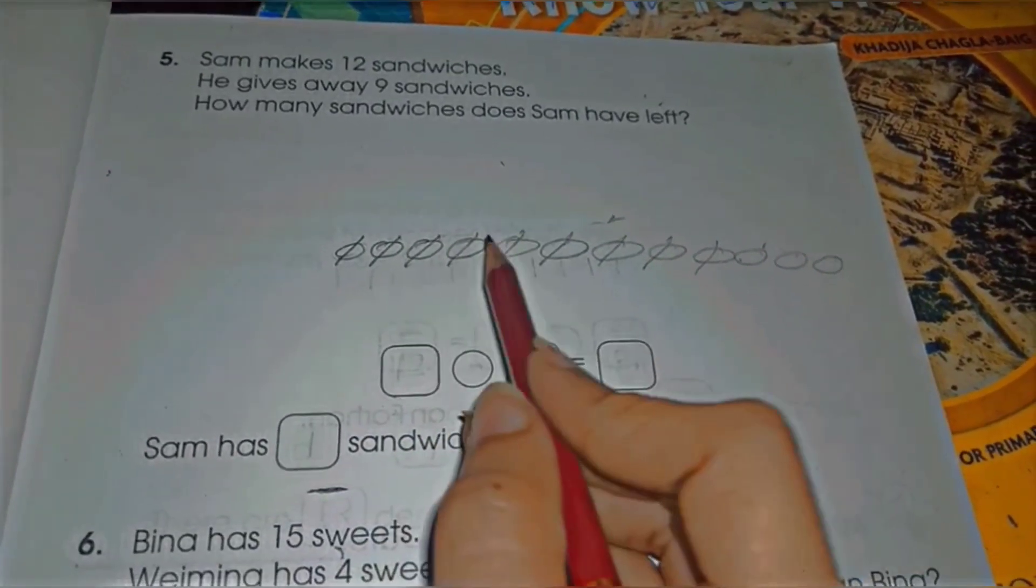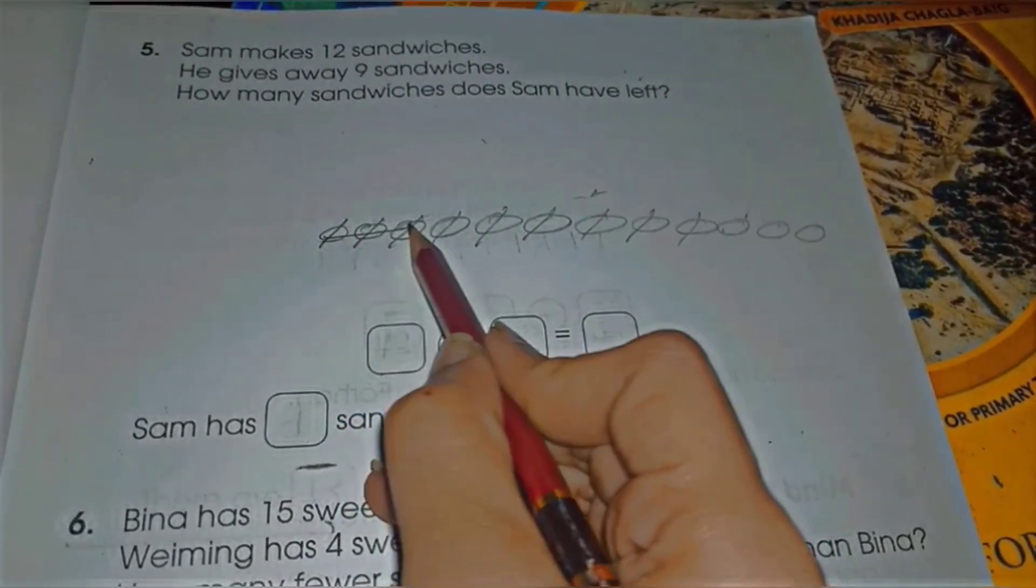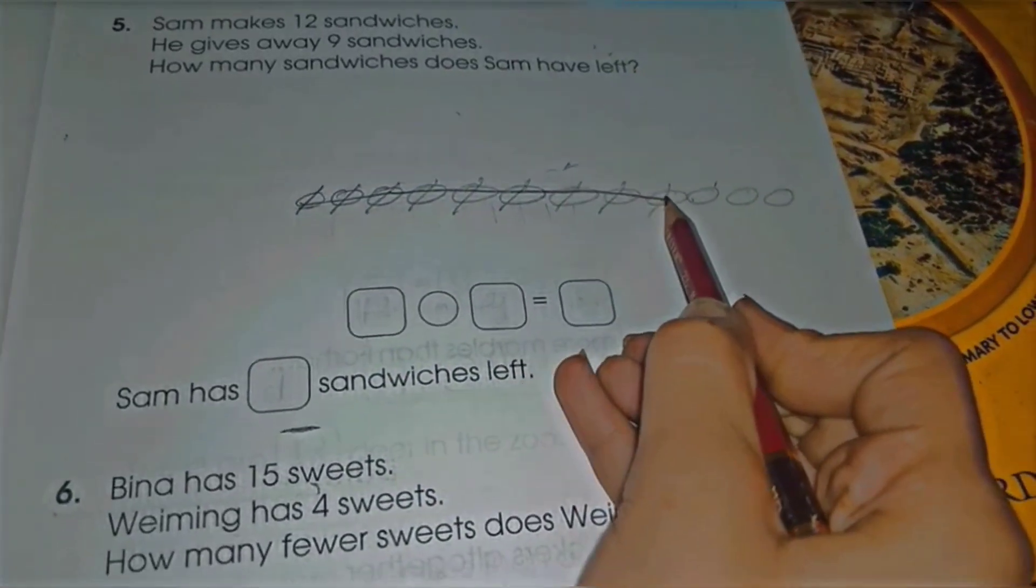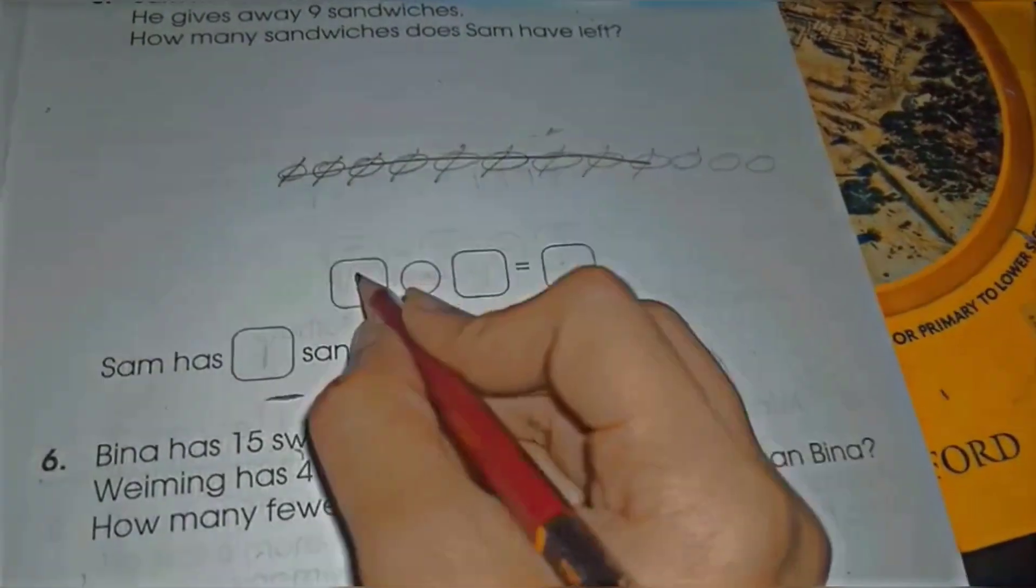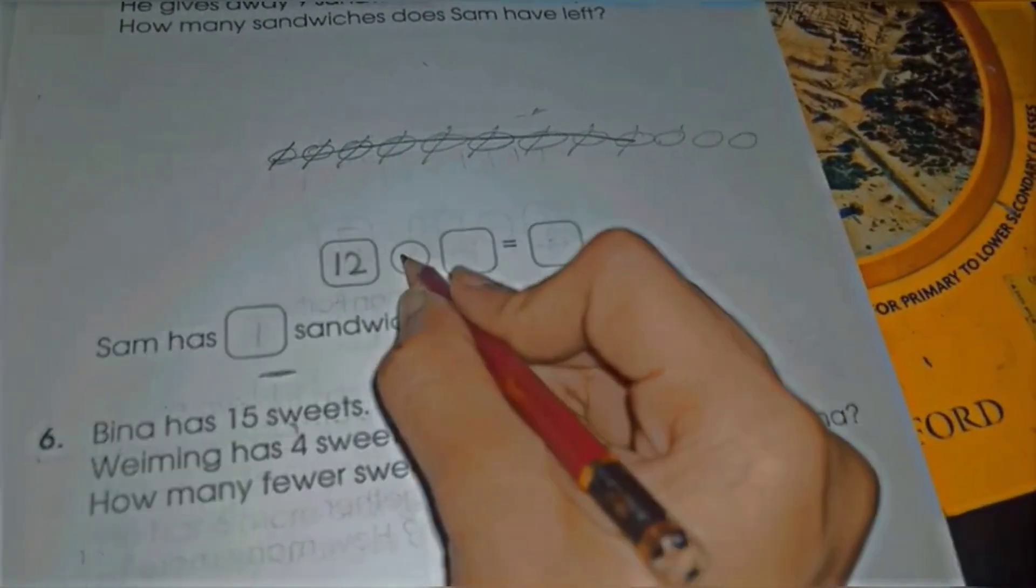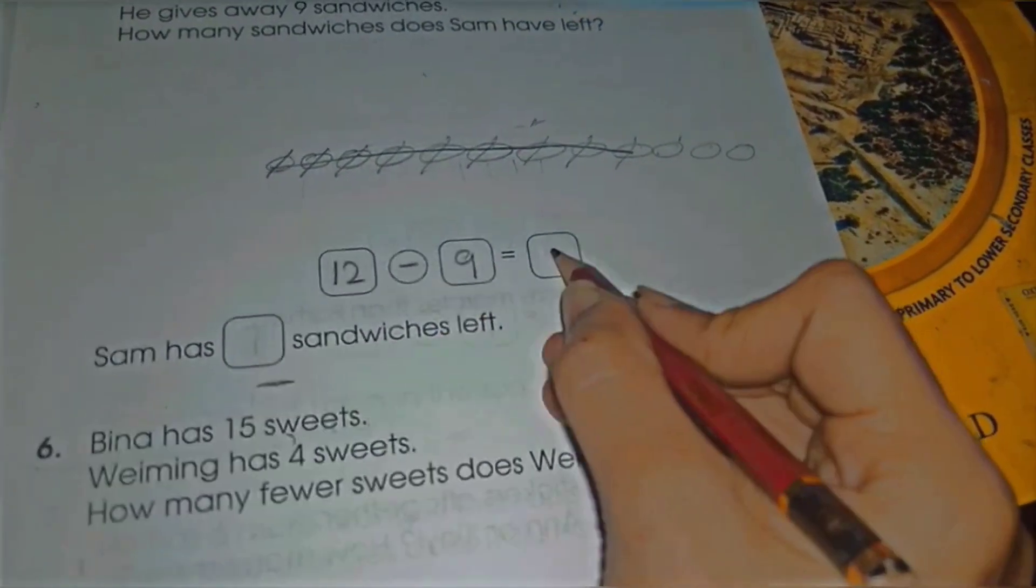Now he has 3 sandwiches, right? So 12 minus 9 equals 3. It means Sam has 3 sandwiches left. Understood?